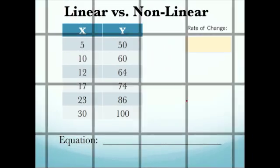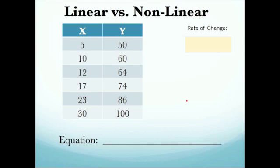So let's look at our first table. In our table, we have different ordered pairs. We have 5, 50; 10, 60; 12, 64; 17, 74; 23, 86; and 30, 100. We'll want to look at this and determine is this linear or not. So what we're going to do is compare the change in the x's and the changes in the y's. In the first one, from 5 to 10, that's a change of 5. 10 to 12 is a change of 2. 12 to 17 is a change of 5. Change of 6. Change of 7.